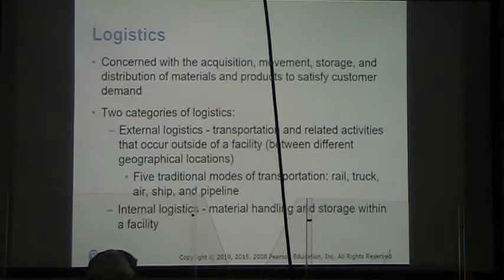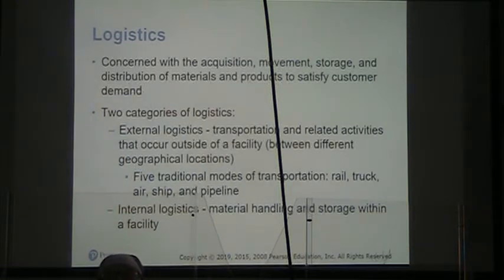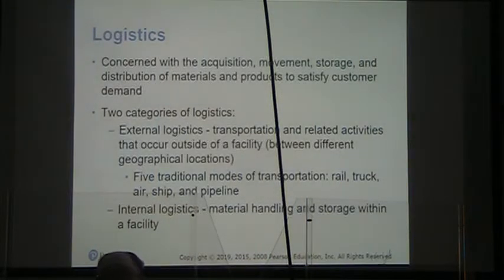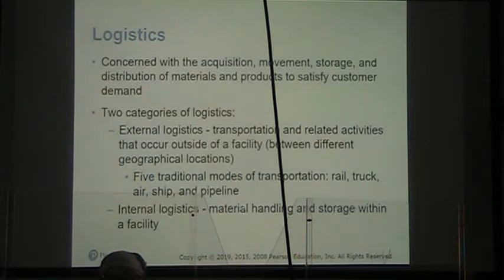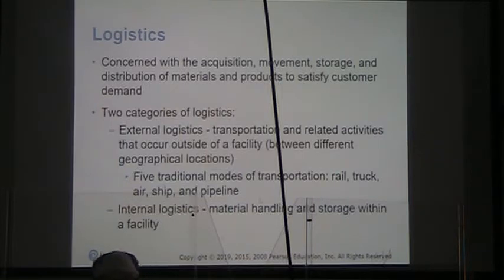Logistics is concerned with the acquisition, movement, storage, and distribution of materials and products to satisfy customer demand. We have two categories of logistics. First is external logistics — transportation and all related activities outside of our facility, between different geographic locations. The five traditional modes are rail, truck, air, ship, and pipeline. Of course, now we may have to add drone to that list.